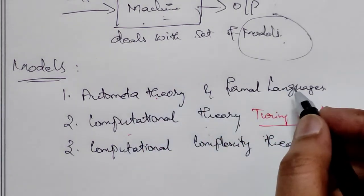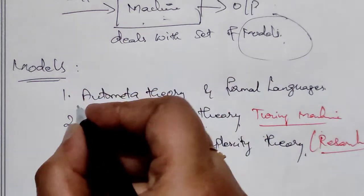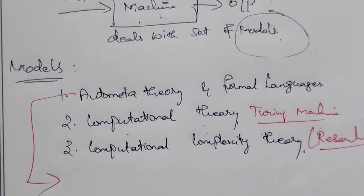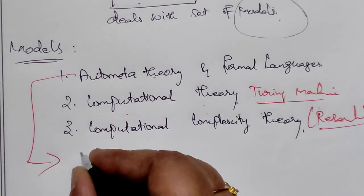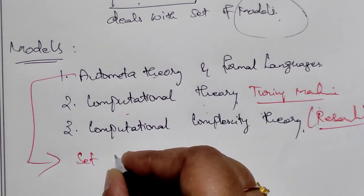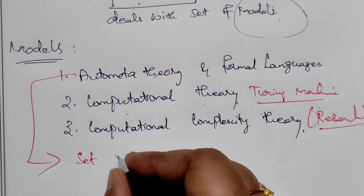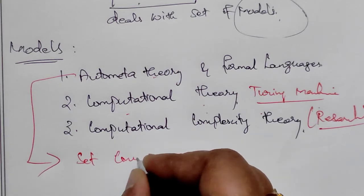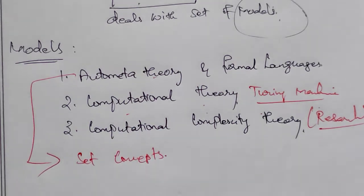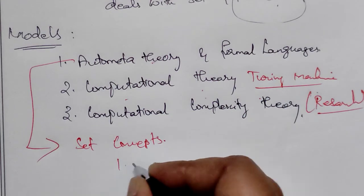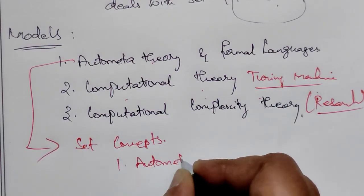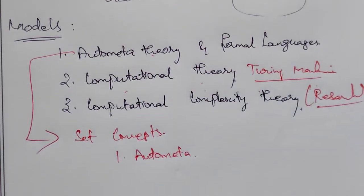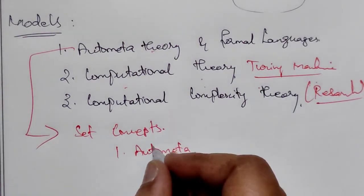Automata and Formal Languages are the basic things in theory of computation. This includes set concepts, which are the main foundation of automata.